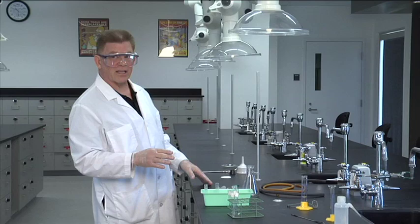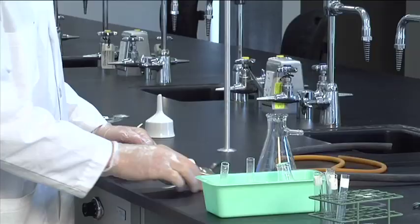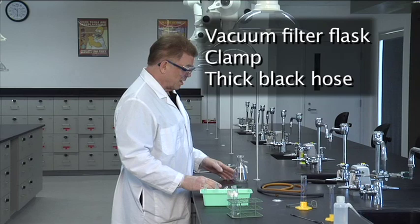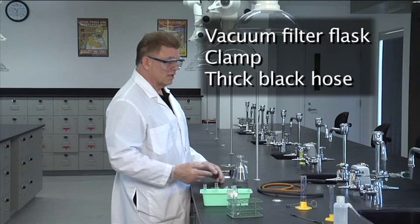To do the vacuum filtration, you need the vacuum filter flask. You're going to need to clamp the vacuum filter flask because, as you will see in a minute, maybe I won't clamp it yet. I'll just show you what's going to happen if we don't clamp it. The answer is it's going to fall over and something's going to break and spill and it will be a mess.